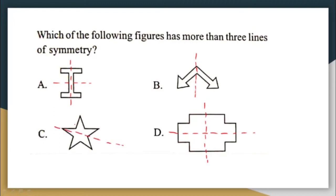Looking at option C, it has one, two, three, and four lines of symmetry — definitely more than three lines of symmetry. The correct answer is option C. I hope the questions we solved in this video were clear to all of you. Thank you.